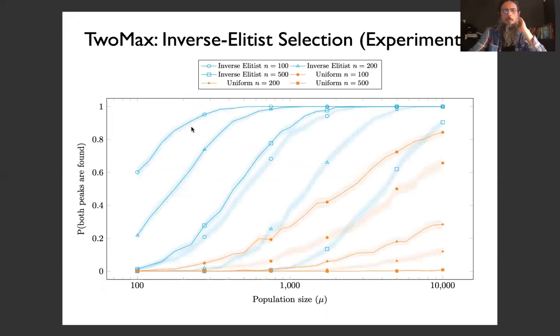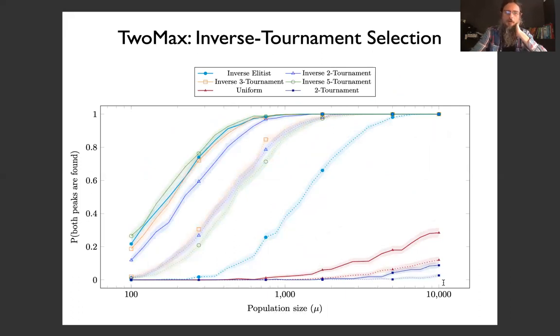So I conclude with some experiments. Here we see the standard TwoMax function. As the population size increases, the inverse elitist selection algorithm probability of finding both optima goes to one. As the problem size increases here, the uniform selection operator probability of finding both peaks goes to zero, as the theory predicted. So what happens, again, TwoMax function with inverse tournament selection, we see that it performs even better. So this is inverse elitist, we select the worst, if we select using various tournament sizes, we find both optima, the probability grows to one more quickly of finding both optima. This is uniform, which fails, as we've seen earlier. If we increase the selective pressure on this tournament, we have an even lower, this is a two-tournament positive, an even lower probability of finding both optima.